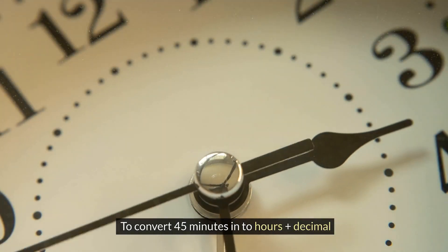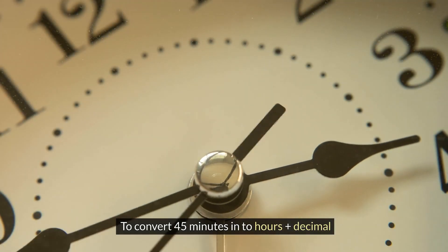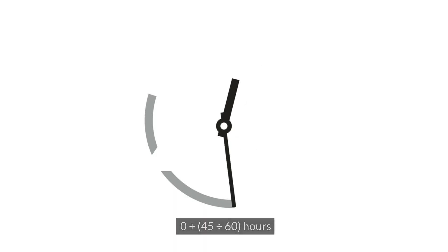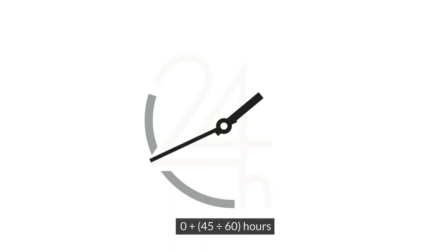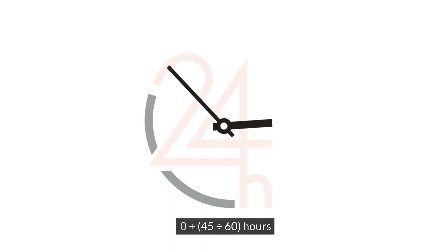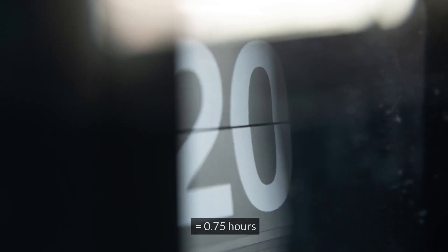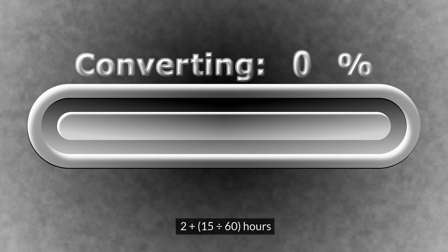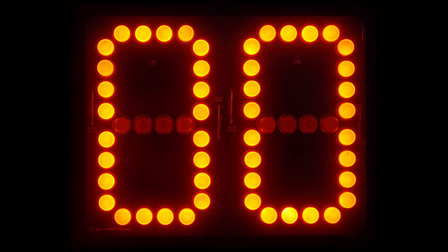To convert 45 minutes into hours: 45 divided by 60 equals 0.75 hours. Or for 2 hours 15 minutes into hours: 2 plus 15 divided by 60 equals 2.25 hours.